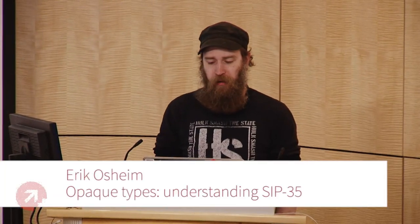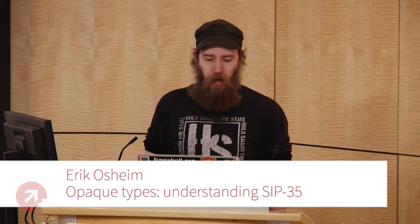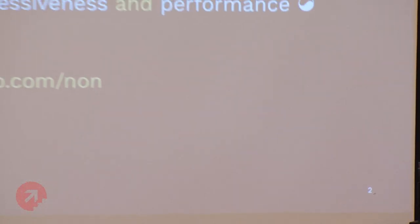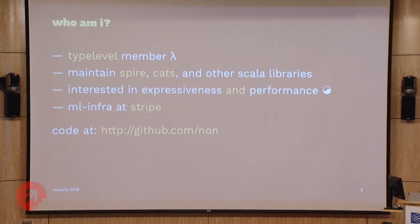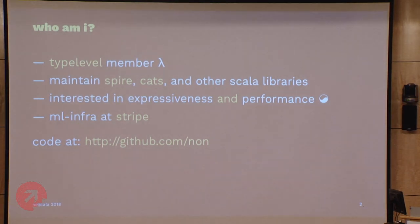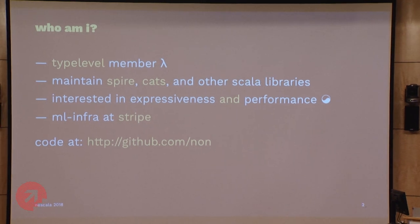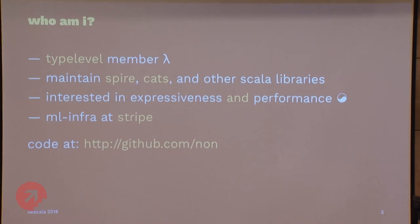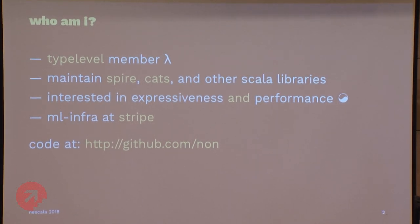As Rob said, my name is Eric Asim and I'll be speaking about SIP 35, which is better known as the opaque type SIP. Just one slide on who I am. I'm a type-level member, co-founder, and work on SpireCats and a bunch of other Scala libraries. Very relevant for this SIP, I have a strong interest in static FP and expressing your intention with types, but I really don't want to give up performance.